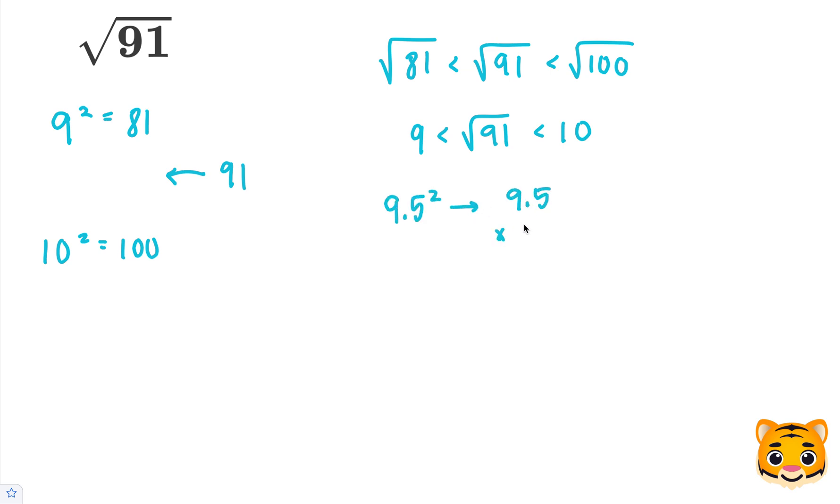We'll do 9.5 times 9.5. 5 times 5 is 25, carry the 2. 9 times 5 is 45, plus 2 is 47. Add our 0. 9 times 5 is 45, carry the 4. And then 9 times 9 is 81, plus 4 is 85. When we add these together, we end up getting 90.25.